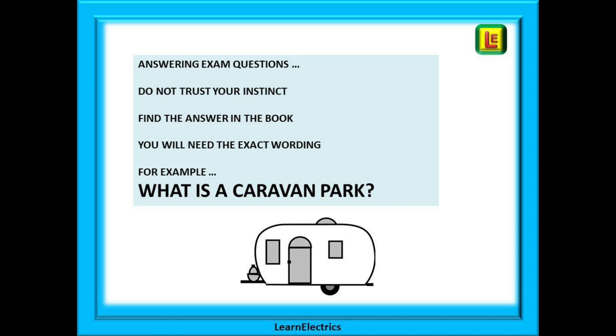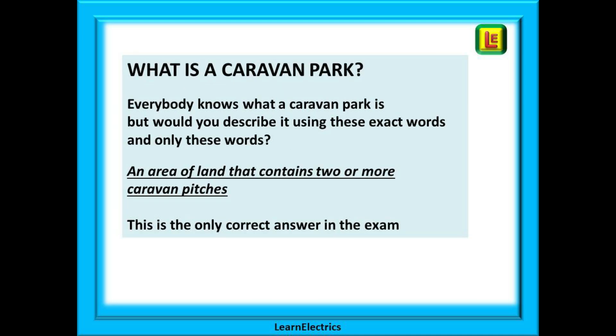For example, a question might ask what is a caravan park? Everybody knows what a caravan park is but would you describe it using the exact words shown here and only these words? An area of land that contains two or more caravan pitches. This is the only correct answer in the exam so you must find the definition if you want the point.